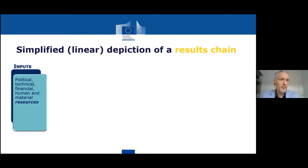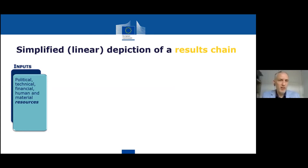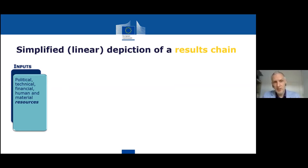We start from the inputs. These are the things that we mobilize in order to enable us to do the intervention. You can think of money and financial resources, but there are others — human resources, material, technical, and also political, in the sense that there will have to be support from decision makers in order to make sure that this intervention actually produces the change that we would like to see.